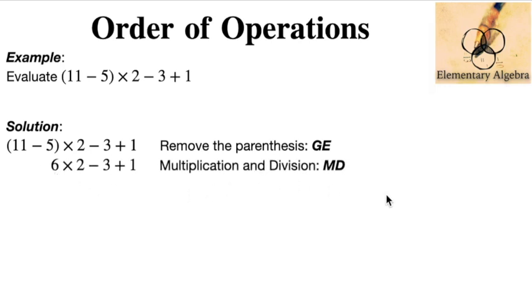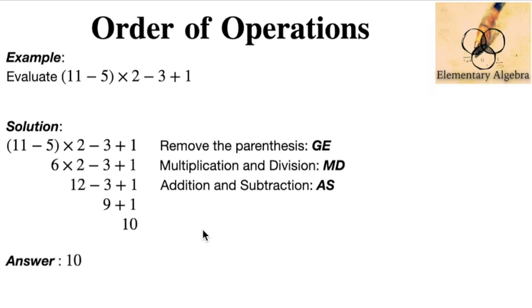11 minus 5 is clearly going to give us 6. After that there's no more groupings, let's proceed to multiplication and division from left to right. Since we have only 6 × 2 as our multiplication, 6 times 2 is clearly 12. And we will do addition and subtraction from left to right, so we have 12 - 3 is going to give us 9, plus 1 equals 10. That is our answer, so our answer is 10.